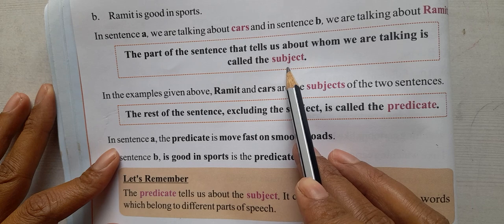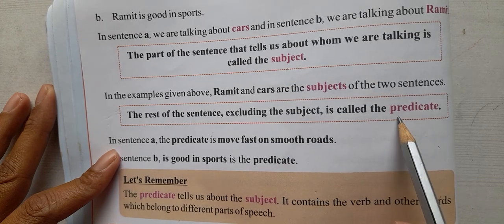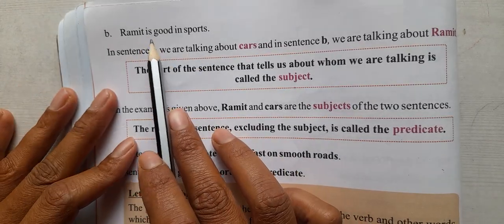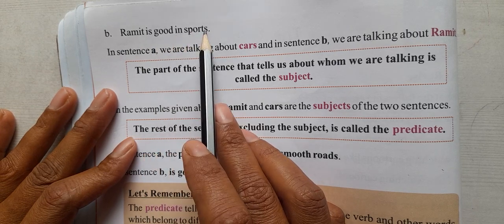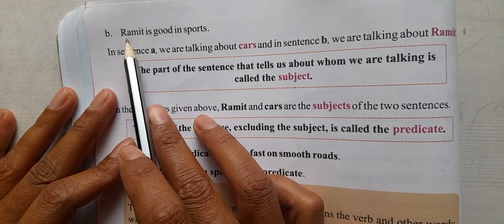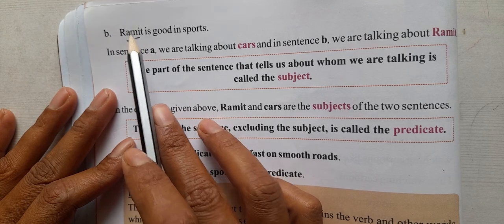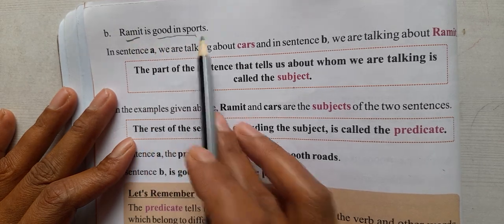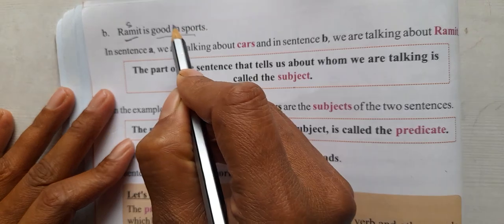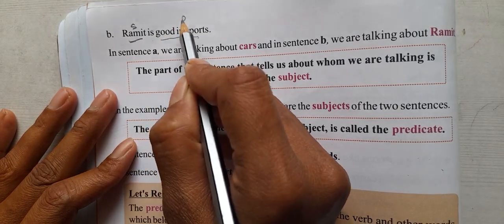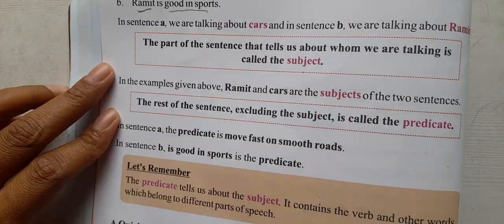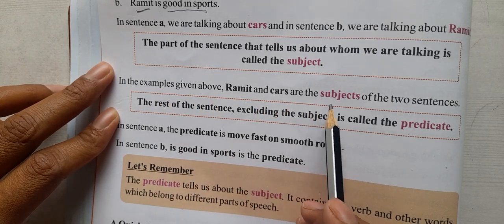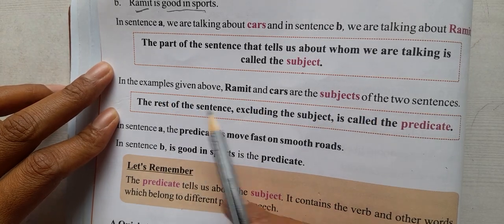The subject is the part of the sentence we are talking about. In sentence B, 'Ramit is good in sport' — who is good in sport? Ramit. So 'Ramit' is the subject. The predicate is 'is good in sport.' In the examples above, Ramit and car are the subjects of the two sentences.